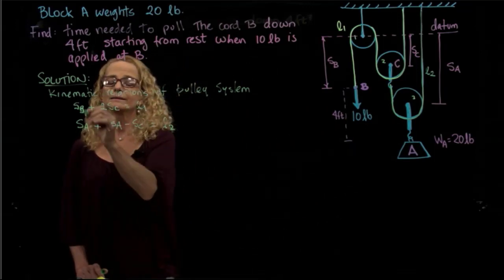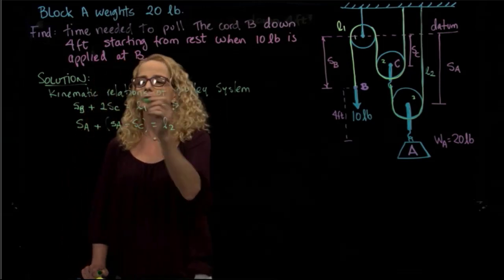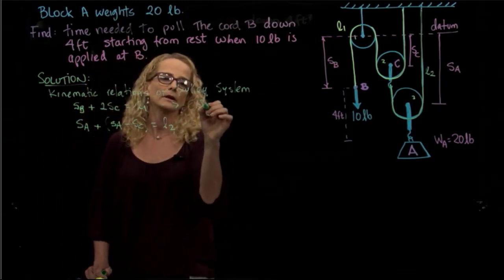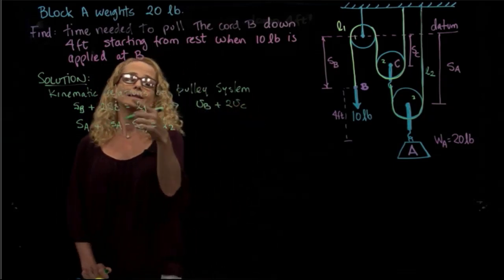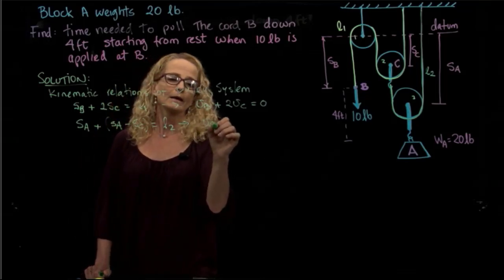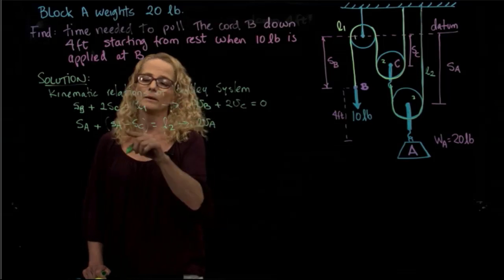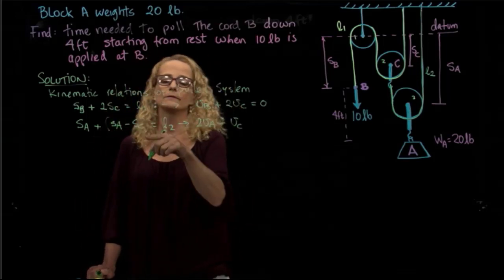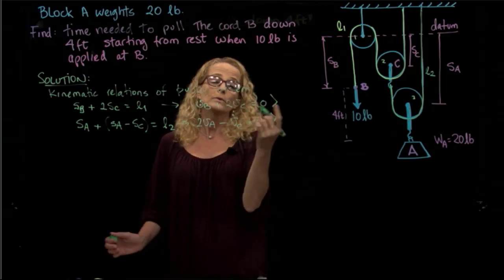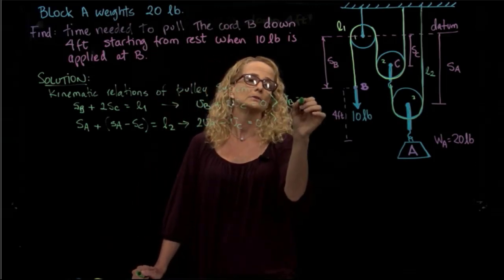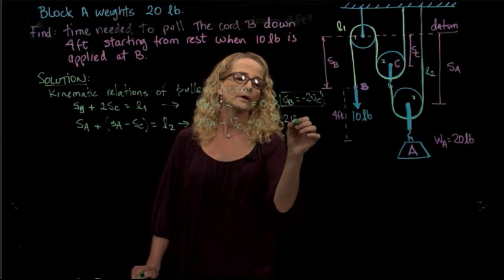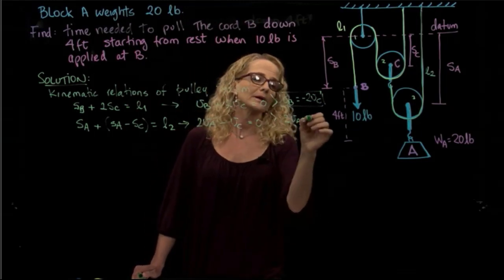From here, I can differentiate both sides of the equations with respect to time. The derivative gives me: velocity of B plus two times velocity of C equals zero. And from the second equation: two times velocity of A minus velocity of C equals zero. So I get that velocity of B equals negative velocity of C, and two times velocity of A equals velocity of C.